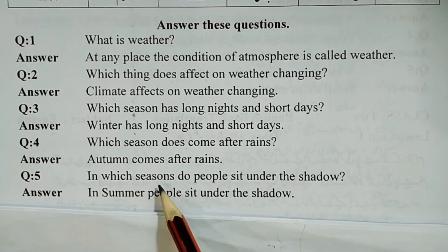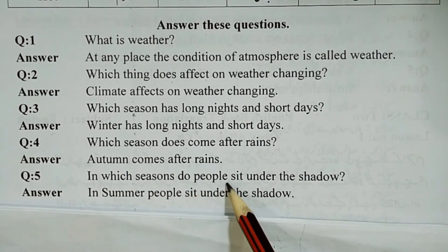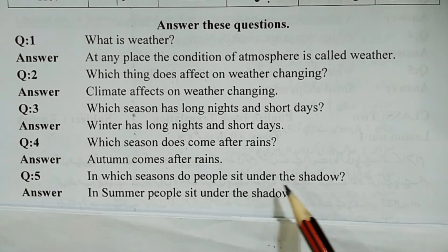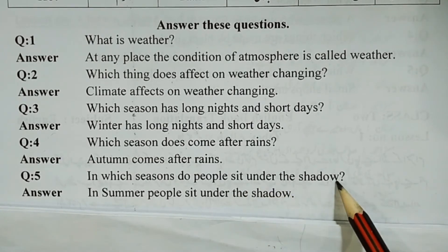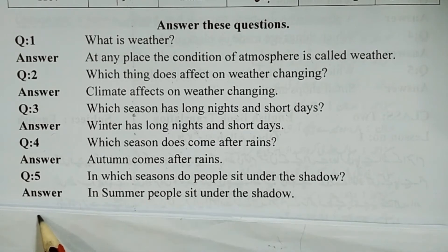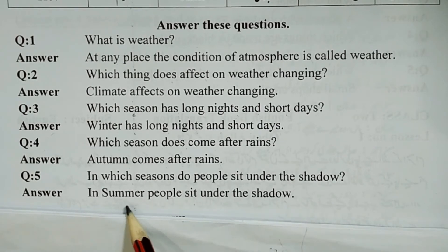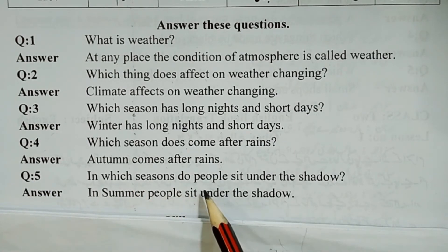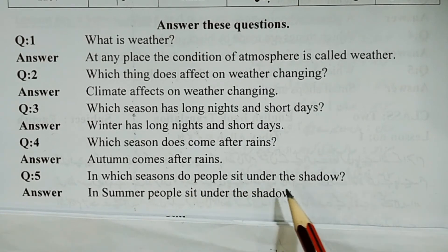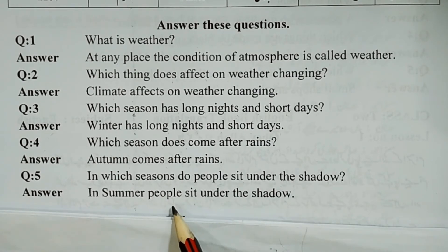Question number five: In which season do people sit under the shadow? کس موسم میں لوگ سائے کے نیچے بیٹھتے ہیں؟ Answer: In summer, people sit under the shadow. گرمی میں لوگ سائے کے نیچے بیٹھتے ہیں۔